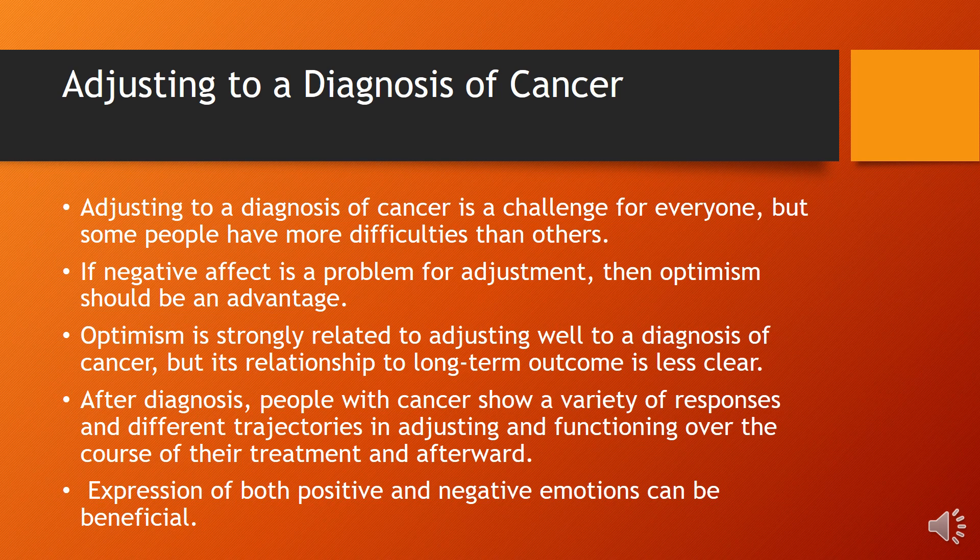If there is a negative affect, the individual tends to be more pessimistic than optimistic, making it difficult to adjust to the diagnosis. Optimism is strongly related to adjusting well to a diagnosis of cancer, though its relationship to long-term outcome is less clear. People face many difficulties in adjusting — financial difficulties, severity of symptoms, accommodation, treatment finances, and pain during treatment. Expression of both positive and negative emotions can be beneficial so that the individual does not develop comorbid mental health problems.